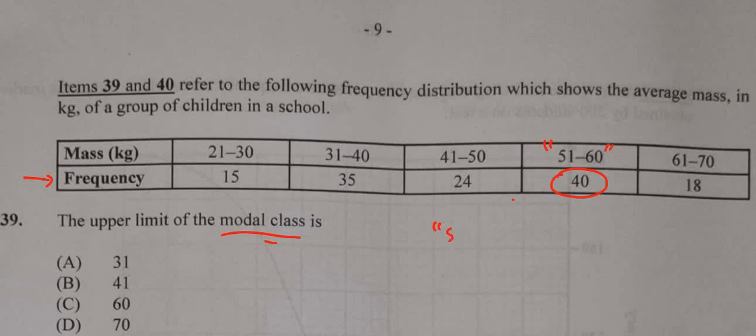So the class we're looking at is class 51 to 60 and they ask for the upper limit. The final number is the upper limit. The first number is the lower limit. And so this is the upper limit of 60.